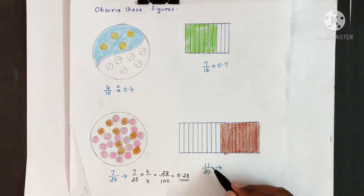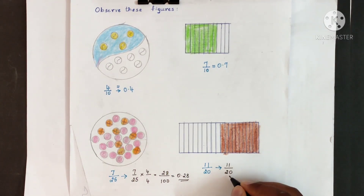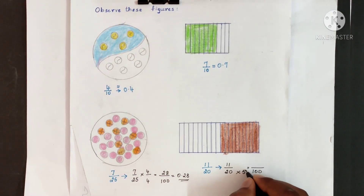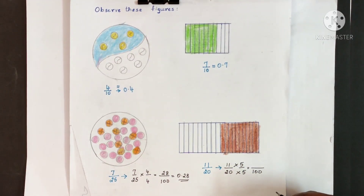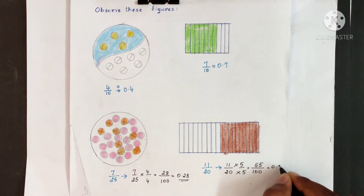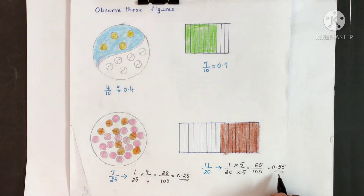Same way, what will be the decimal fraction of 11 20ths? We do not have 10 or powers of 10 as the denominator. We need to convert these fractions. You can convert 20 into 100. Multiply 20 by which number to get 100? You have to multiply 20 by 5 — two 5s are 10, two 0s are 0. So multiply the numerator also by the same number. When you multiply 11 by 5, you get 55. When you multiply 20 by 5, you get 100. So this can be written in decimal fraction as 0.55. The decimal fraction of 11 20ths is 0.55.